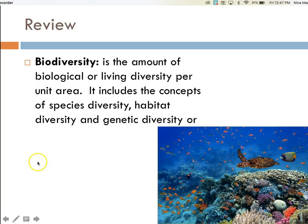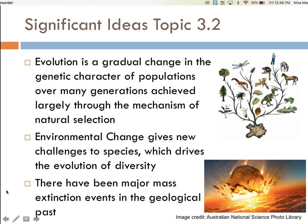Recall from topic 3.1 that biodiversity is the amount of biological or living diversity per unit area. It includes the concepts of species diversity, habitat diversity, and genetic diversity. The significant ideas for topic 3.2 are: 1. Evolution is the gradual change in the genetic character of populations over many generations, achieved largely through the mechanism of natural selection. 2. Environmental change gives new challenges to species, which drives the evolution of diversity. And 3. There have been major mass extinction events in the geological past.